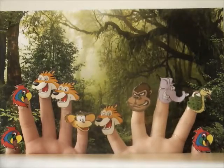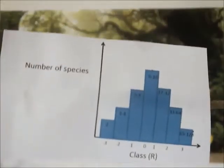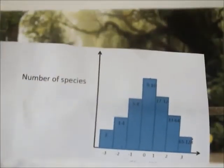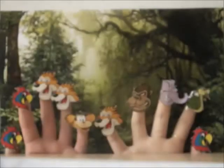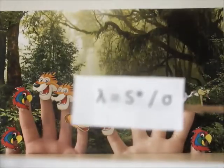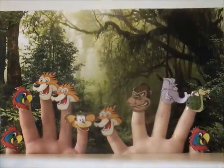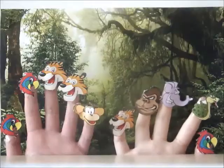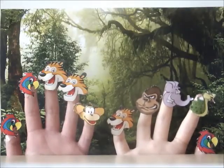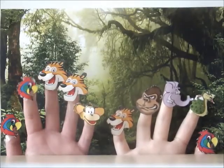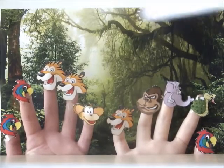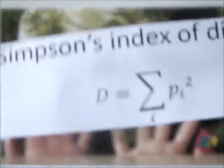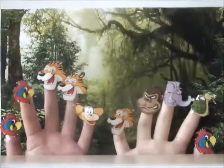Here's a log-normal graph, another parametric diversity index. Using this equation is an effective way of measuring diversity. But what if our community doesn't follow a parametric distribution? Then you can either use Simpson's diversity index or Shannon's diversity index.